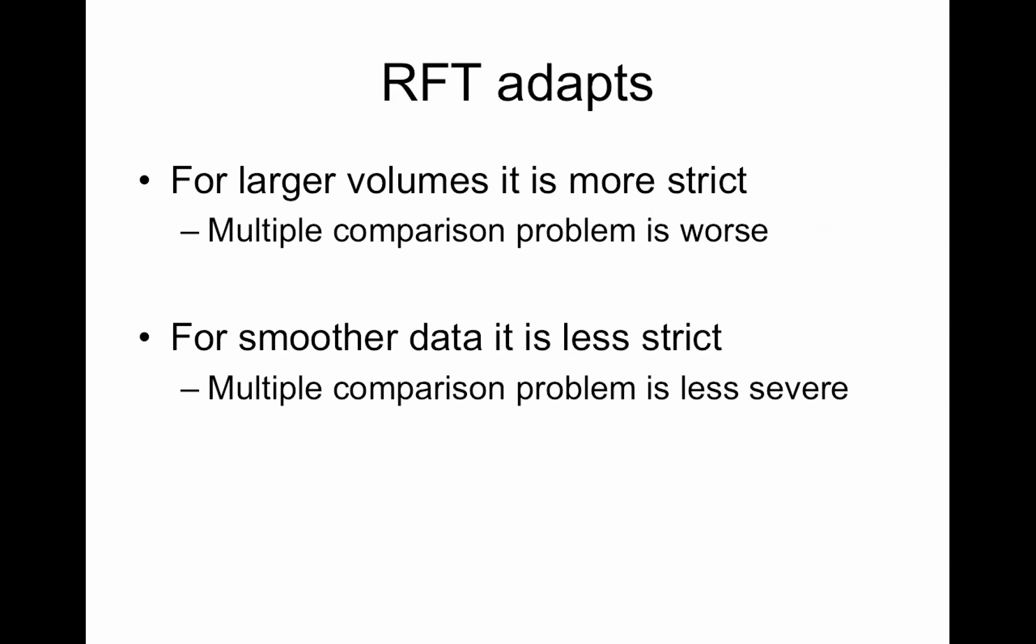Right. So random field theory adapts. For larger volumes, it's more strict. And for smoother data, it is less strict. Hopefully that makes sense.